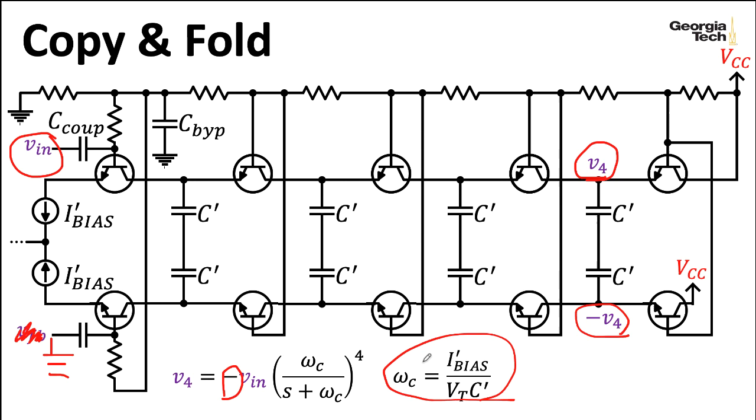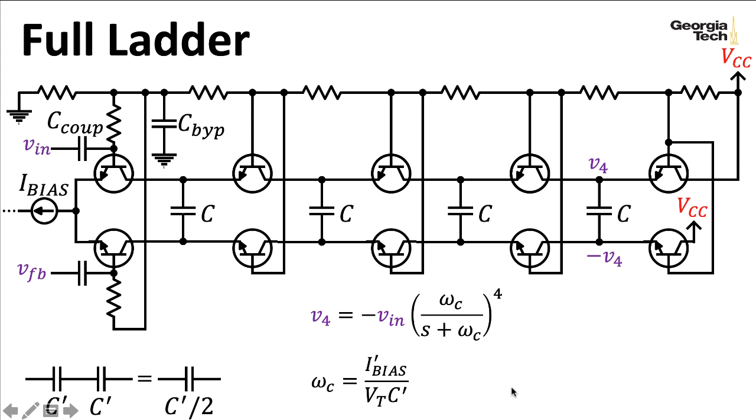I still have this relationship between what the cutoff frequency is and this bias. But this is now a little weird. I have these double capacitors here and I have these two current sources. Obviously, what I want to do is combine these. So here we are trying to combine the C primes we had before and the I bias primes we had before. We still have the same overall structure of the transfer function. We do need to tweak our description of the cutoff frequency to match what the full circuit is actually doing.